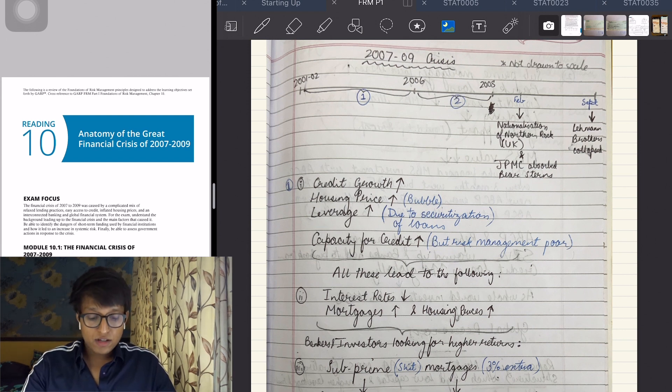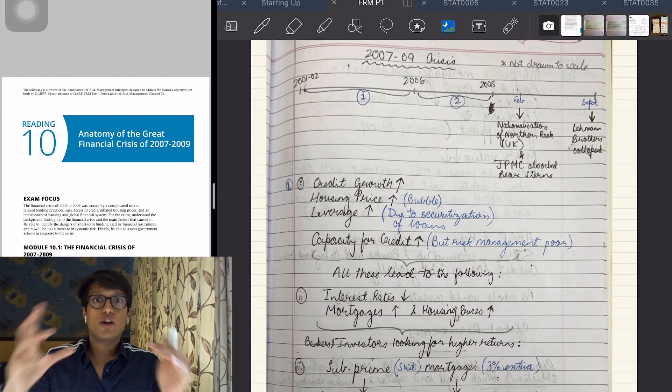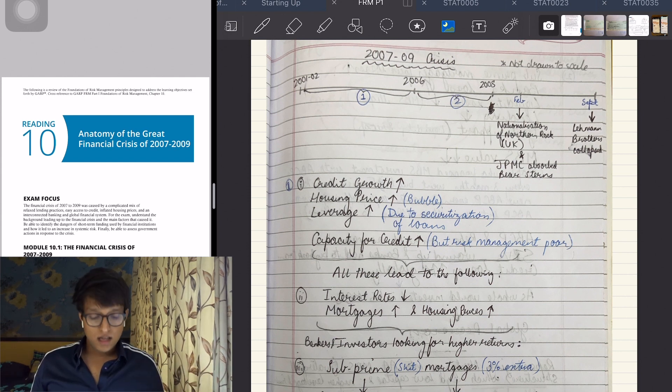Leverage was increasing because, as I explained, the securitization pooling of loans for the CDOs was increasing, so leverage was also increasing to a huge extent.